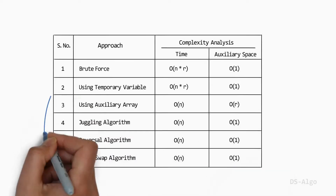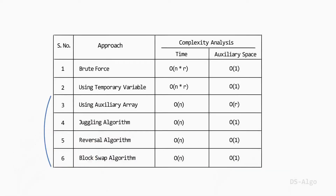Approaches 3, 4, 5, and 6 are types of block swap methods, and the time complexity of each algorithm is linear, i.e., O(n). Now let's understand the concept, algorithm, and implementation of each listed approach one by one.